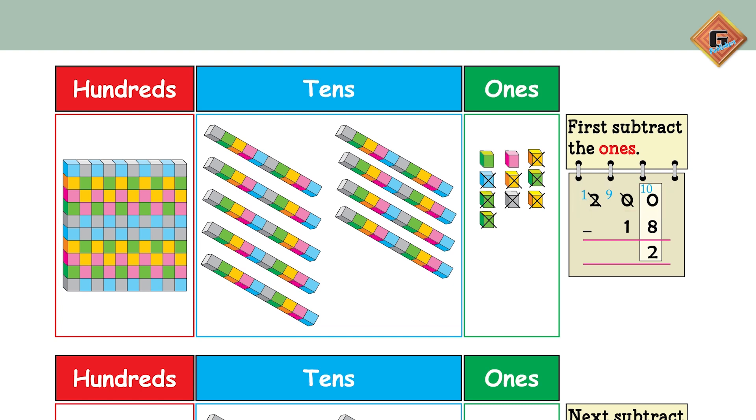Move to page 71. Now if we write it in column form: 200 minus 18. First we are going to subtract the ones. From 10 ones, subtract 8. Cross out the 8. How many are left? Very good, 2.